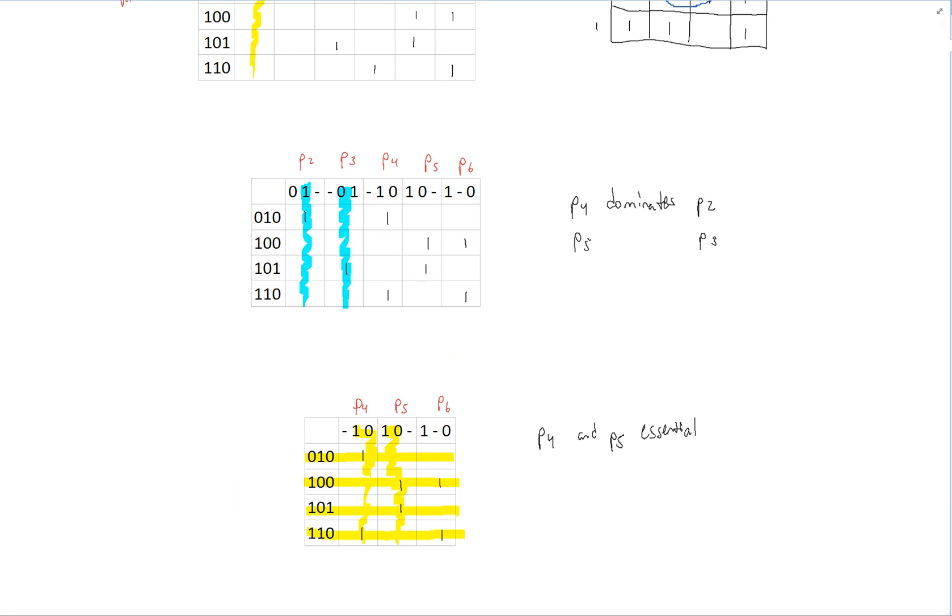And so now, our table is empty. And therefore, we're done. Our solution is going to be that first prime implicant that we chose, P1, and also the two that became essential after that, P4 and P5. This is our solution set.